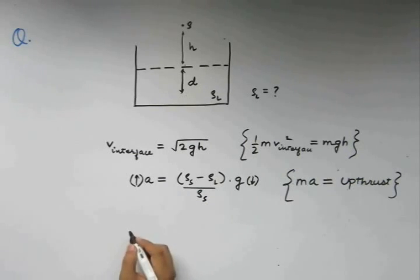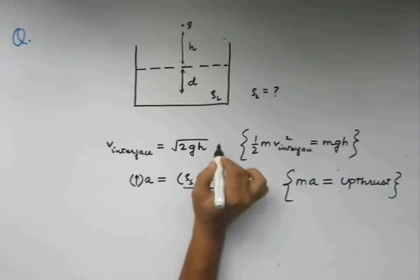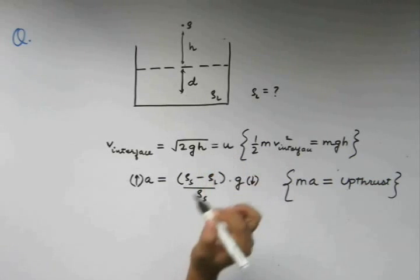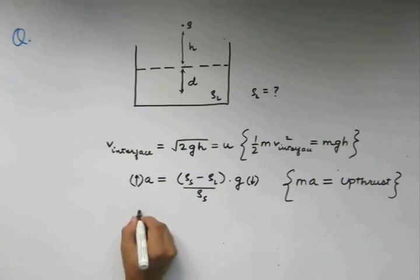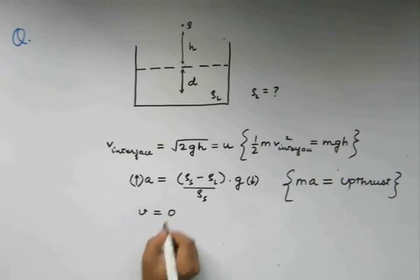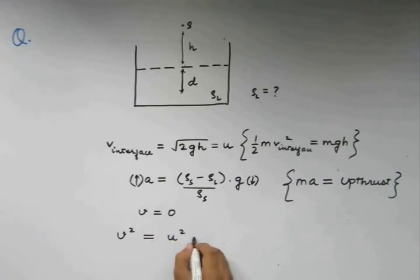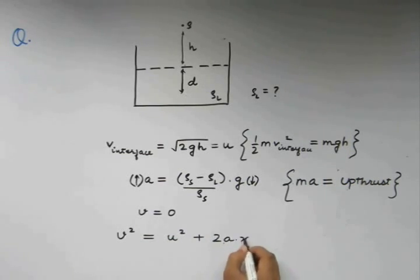So, writing the kinematic equation, say this is u, initial velocity and final velocity v is zero. We have v square is equal to u square plus 2 times a into x. x is basically the distance travelled or the displacement of the body. Because we have a point mass here, we are not considering a body here.